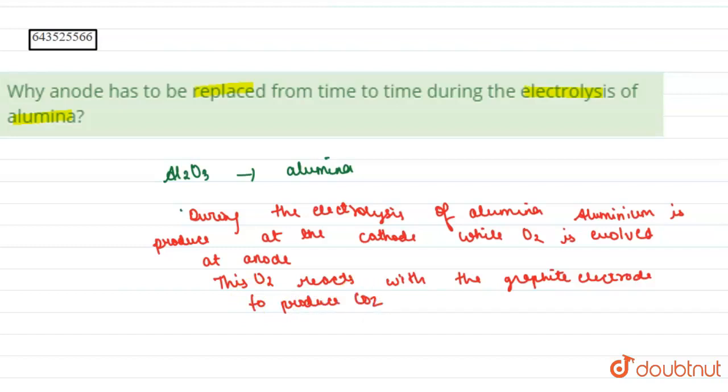Now what will happen is that when O2 reacts with this electrode, the electrode will start eroding. This will lead to eroding of electrode. Hence we need to replace the anode time to time.